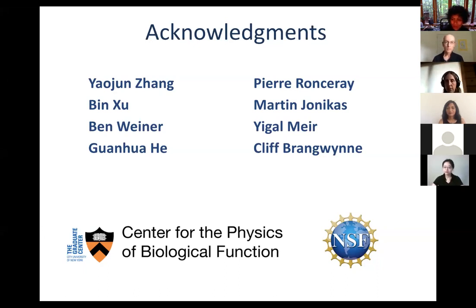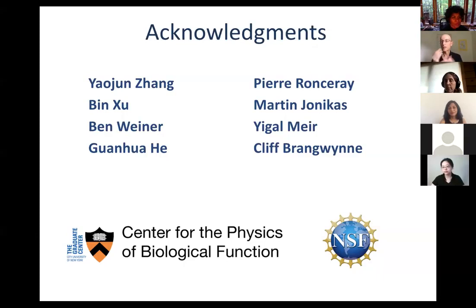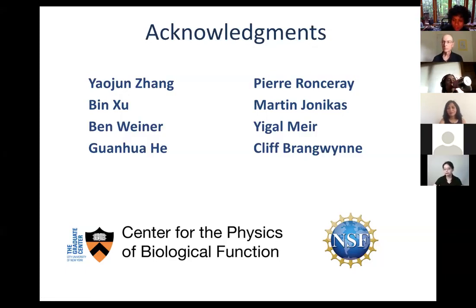Rudra Biswas asks: what do the data say about the distribution of rubisco in the daughters after division? As far as we know, the dispersed molecules are independent, so it's basically uniformly spread between the two daughters — that's just based on visual images. Omar Saleh asks: in the rubisco system, you gave the impression that rubisco is a solid particle while the partner is flexible. Generally, how does the magic number effect depend on the internal flexibility of the two components? One can imagine internal conformational entropy plays a role.